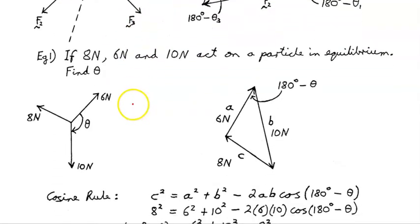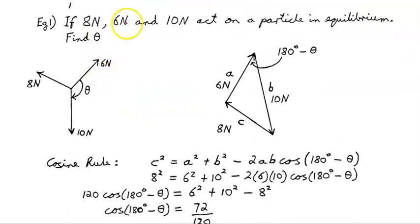So here's an example. If 8 newtons, 6 newtons and 10 newtons act on a particle in equilibrium - so we're told they're in equilibrium. Look at that Pythagoras triangle: 4, 3, 5. Pythagorean triangle. Double the sides: 8, 6, 10.